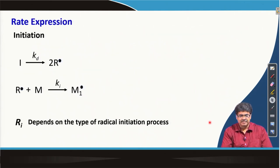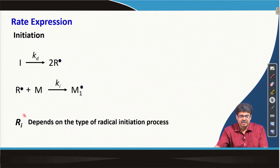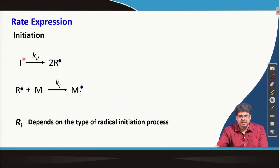The first step is dissociation where we get 2 radicals, and then immediately one radical reacts with the first monomer. These two steps together we call the initiation step, and R_i is the rate of initiation. It depends on the radical initiation process — whether it is by heat, by photochemical means (shining light), or by redox processes. We will come back and discuss how to find R_i depending on the type of initiation.